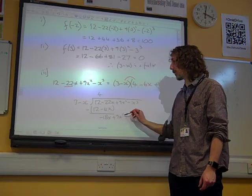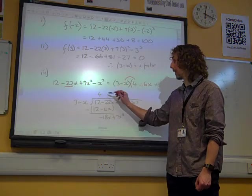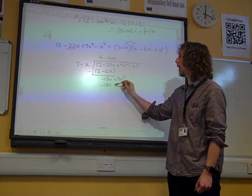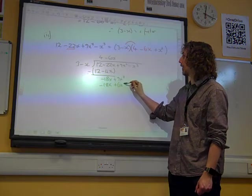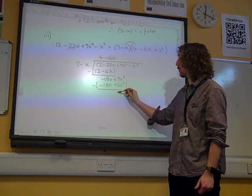Bring down the plus 9x squared. What do you times 3 by to get minus 18x? The answer's minus 6x. Minus 18x plus 6x squared. Subtract, 9 take away 6 is 3x squared.